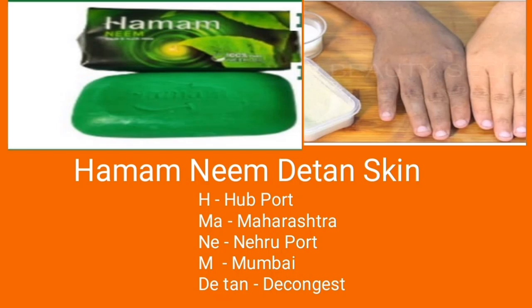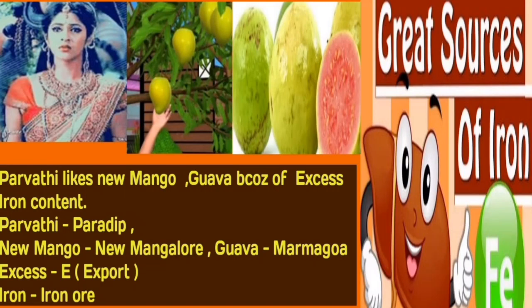Next mnemonic: 'Parvati likes New Mango and Gova because of excess iron content.' Parvati means Paradeep, New Mango means New Mangalur, Gova means Marmagoa. E stands for Export, and Iron stands for Iron Ore. So Paradeep, New Mangalur, and Marmagoa export Iron Ore.